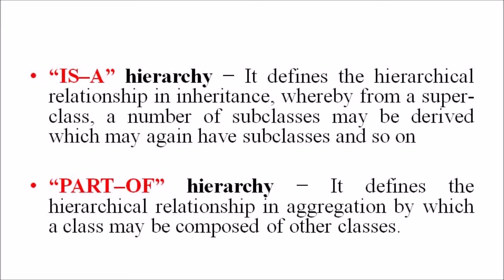In the is-a hierarchy, it defines the hierarchical relationship in inheritance, whereby from a superclass, a number of subclasses may be derived which may again have subclasses and so on. For example, if we derive a class rose from a class flower, we can say that rose is a flower.